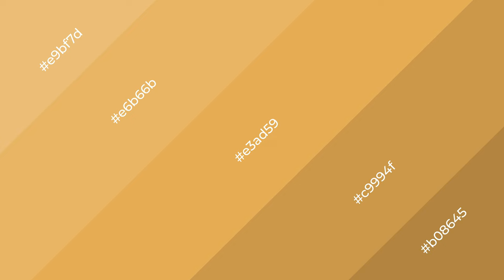To generate shades of a color, we add black to the color. Shades are used in patterns, 3D effects, and layers, and they create depth and drama. Autumn Avenue is a warm color and it emits cozier and active emotions.